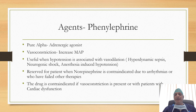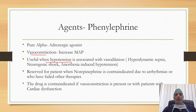Phenylephrine has alpha-1 action similar to norepinephrine, so it causes vasoconstriction and increases mean arterial pressure. This drug is useful when hypotension is associated with vasodilation, as in cases of hyperdynamic sepsis, neurogenic shock, and hypotension associated with anesthesia. It is reserved for patients when norepinephrine is contraindicated due to arrhythmias or who have failed other therapies. This drug is not given when vasoconstriction is present or the patient has cardiac dysfunction.